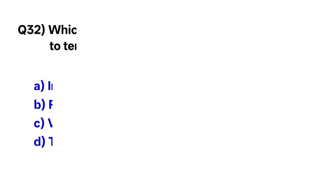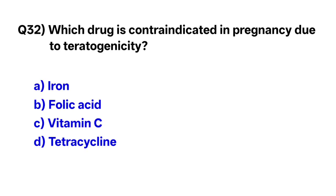Question number thirty-two: Which drug is contraindicated in pregnancy due to teratogenicity? The correct option is tetracycline.